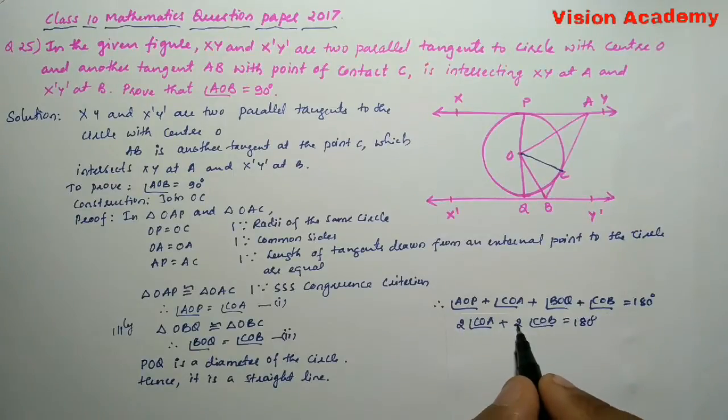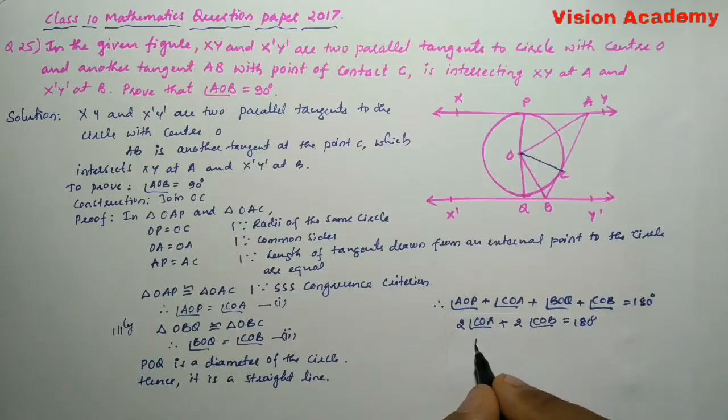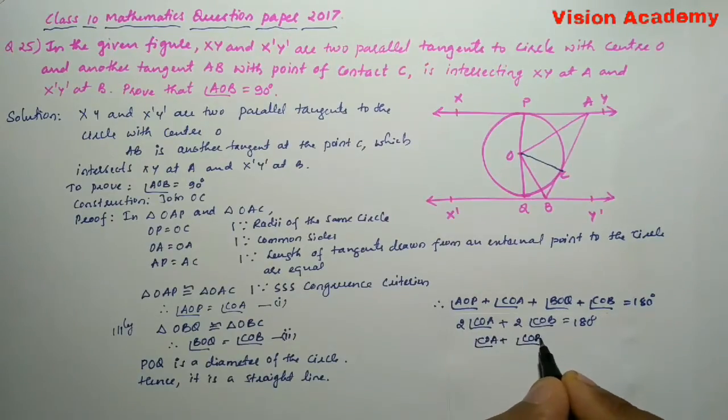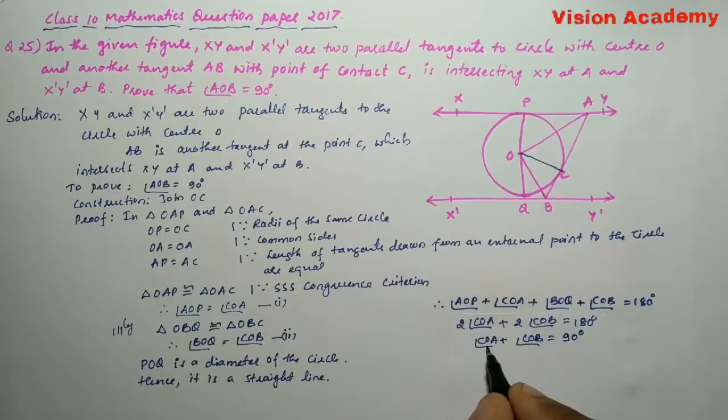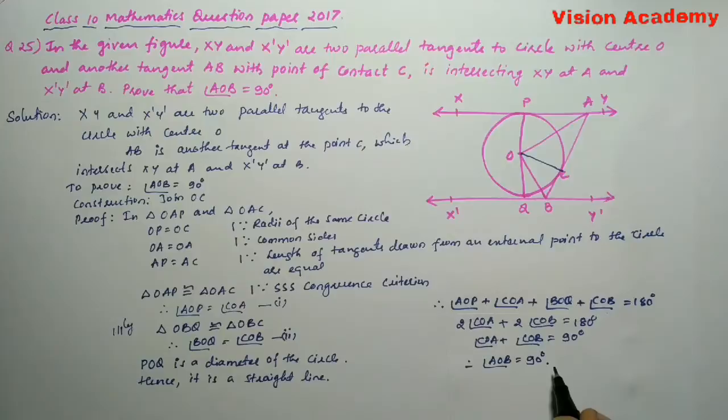Once we take this 2 from LHS to RHS, it will become angle COA plus angle COB is equal to 180 divided by 2 which gives us 90 degrees. Therefore, angle AOB is equal to 90 degrees. Hence, the proof.